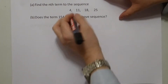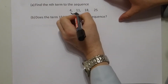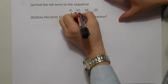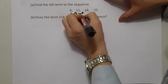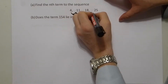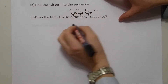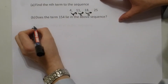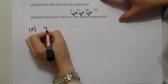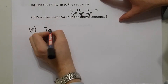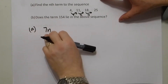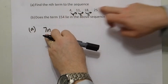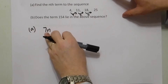Sequences. Here we're going up by 7 each time, so the sequence involves the 7 times table. So 7 times n is the look of this nth term.